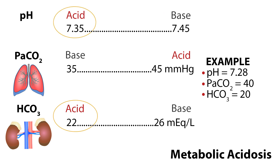Now we will look at metabolic situations. Metabolic acidosis and metabolic alkalosis are caused by the levels of bicarbonate ion in the blood. The kidneys excrete these ions into the urine so they can be eliminated when not needed. If the pH is low — in this example 7.28 — circle acid. The PaCO2 is within normal range at 40, and the HCO3 is acidic at 20. With low bicarb levels and a low pH, you have metabolic acidosis.